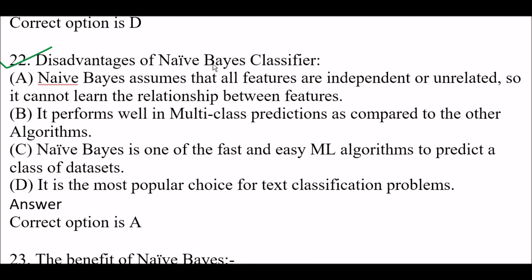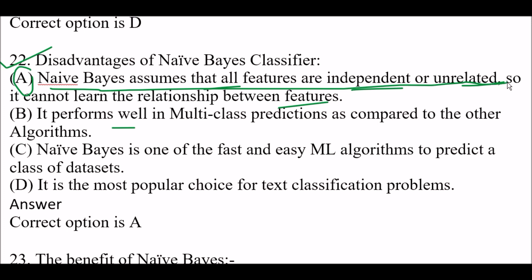Next question: Disadvantage of Naive Bayes classifier — Option A: Naive Bayes assumes that all the features are independent or unrelated, so it cannot learn the relationship between features. Option B: It performs well in multi-class predictions compared to other algorithms. Option C: Naive Bayes is one of the fast and easy ML algorithms to predict a class of dataset. Option D: It is the most popular choice for text classification problems. Right answer is Option A — Naive Bayes assumes all features are independent or unrelated, so it cannot learn the relationship between features.